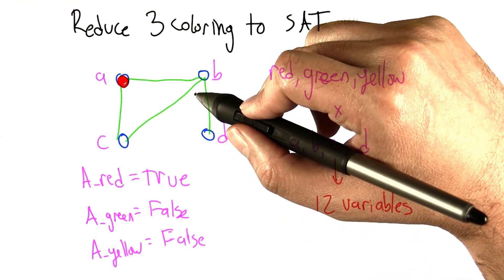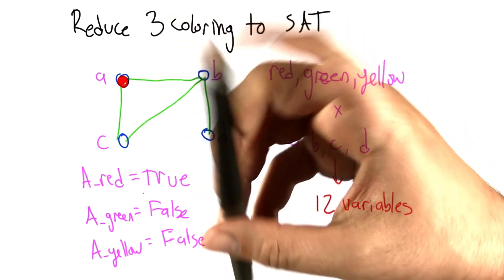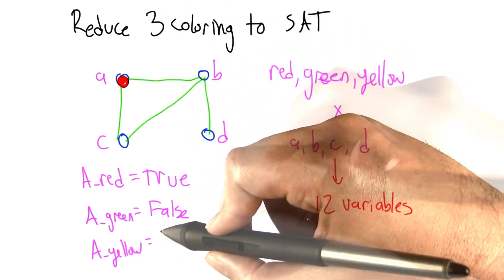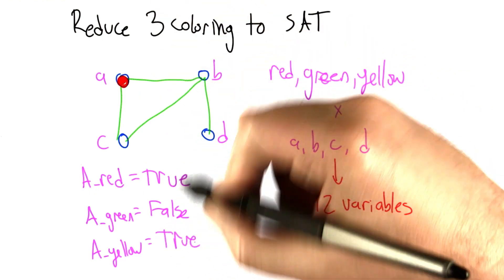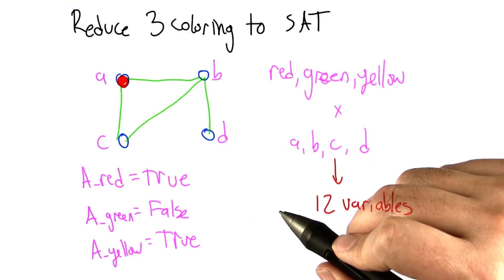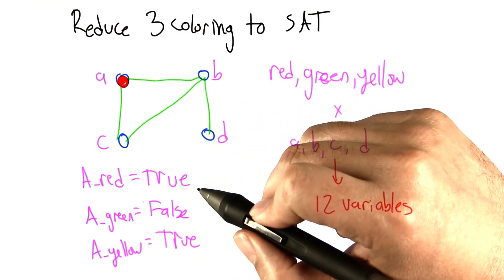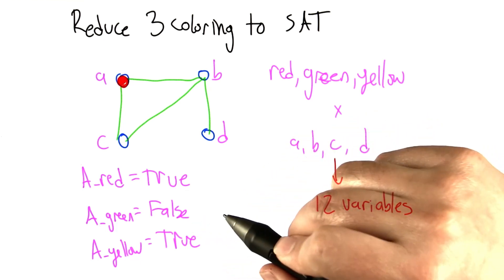In fact, you have to be a little bit careful here because if we assign 2 of these to true, which is a perfectly reasonable thing to do in a Boolean formula, you can't really interpret this as a coloring except for maybe A is orange, but that's not really allowed.